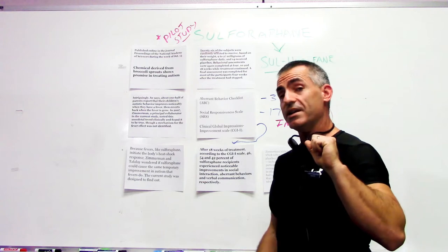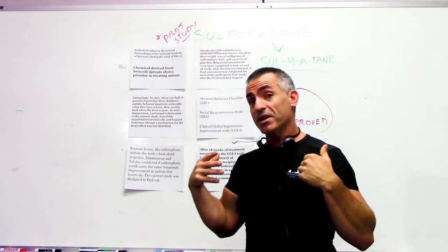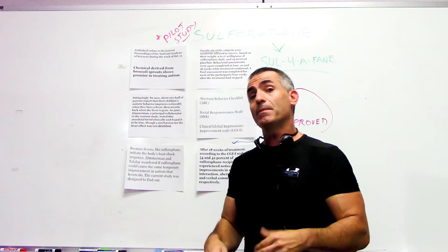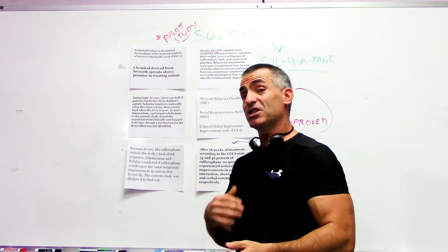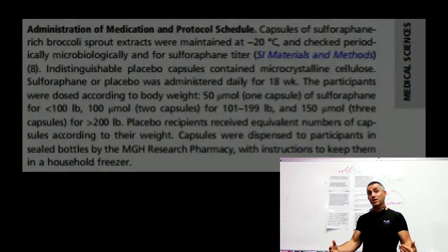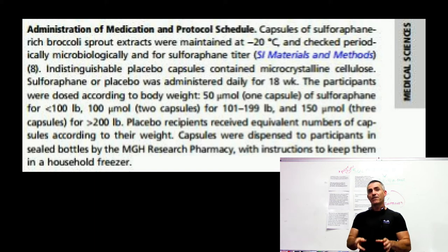So what they did is they moved forward with the study. They took 26 subjects, children with autism, and fed them between 9 to 27 milligrams of sulforaphane for 18 weeks. They started taking measurements at four weeks and took measurements at the end of 18 weeks.